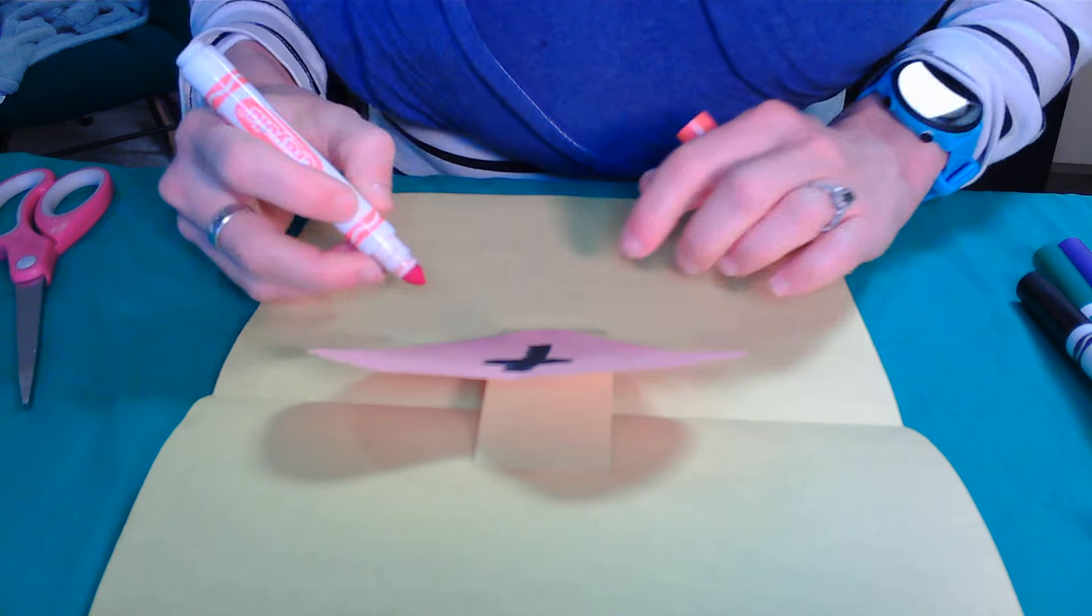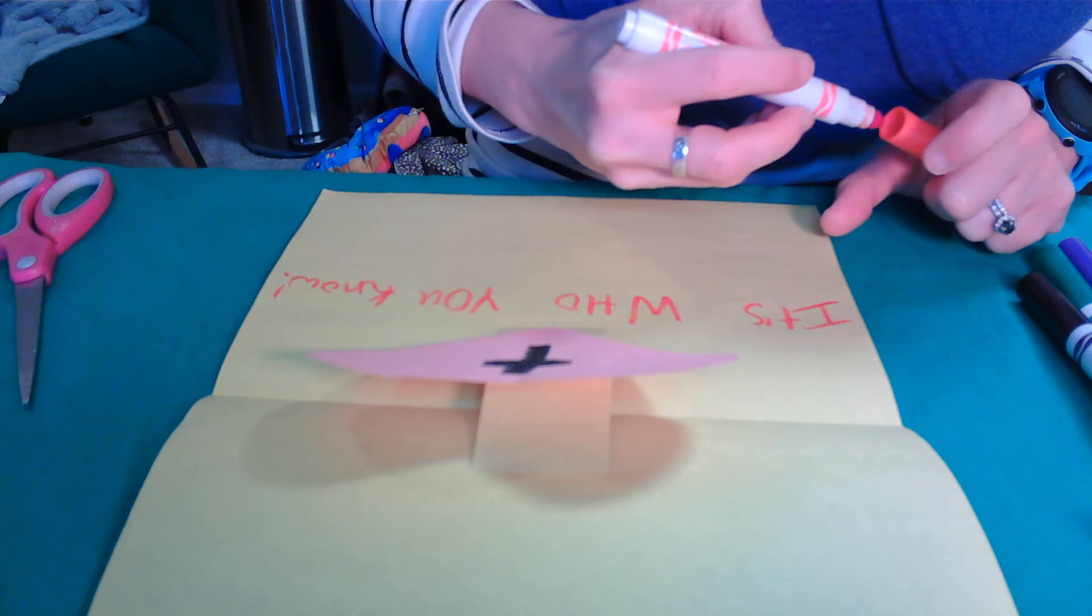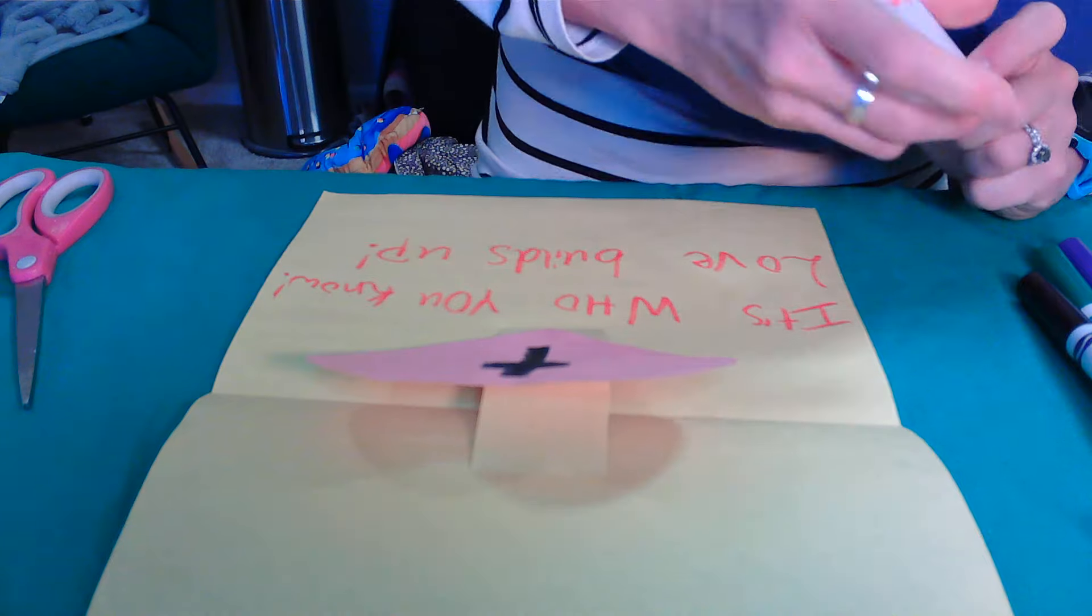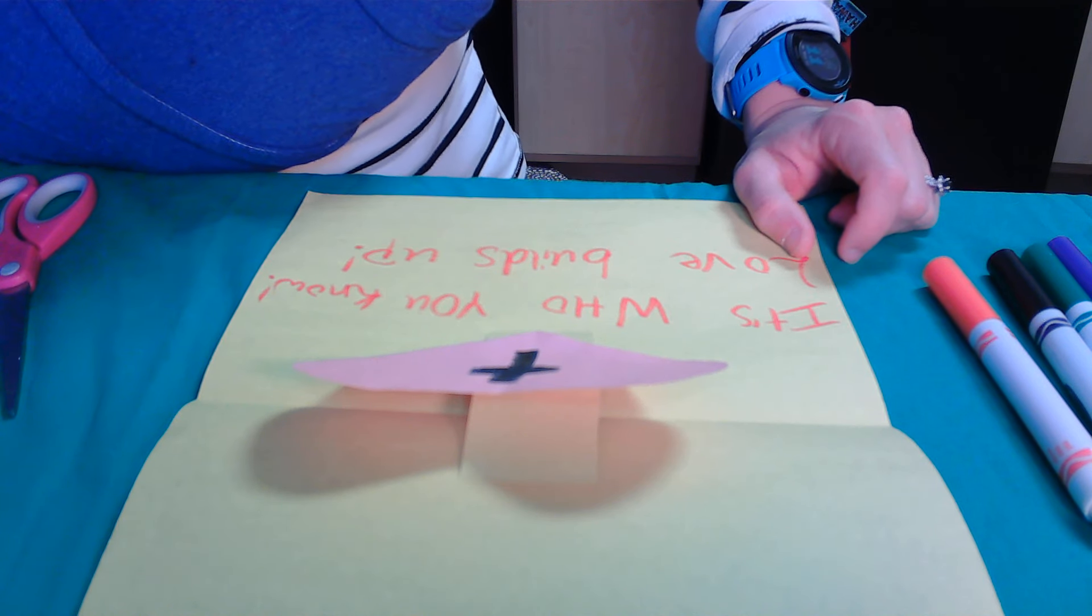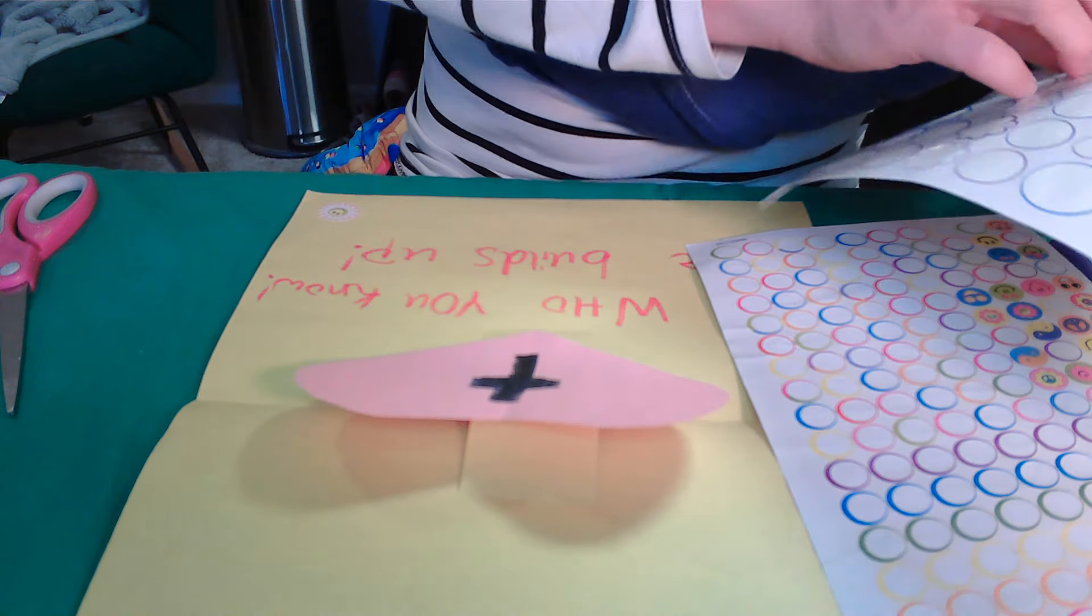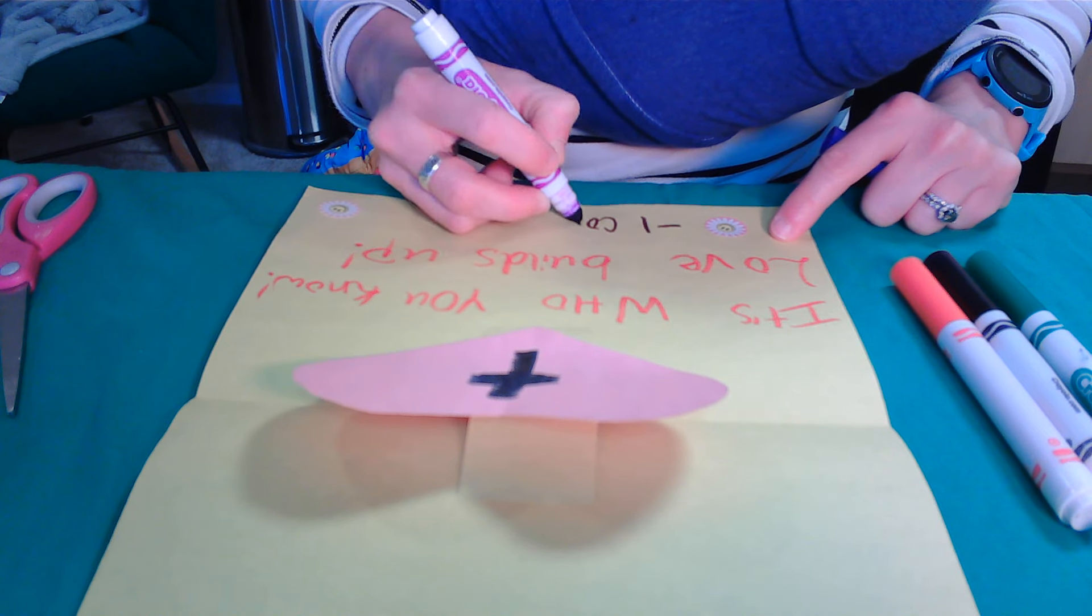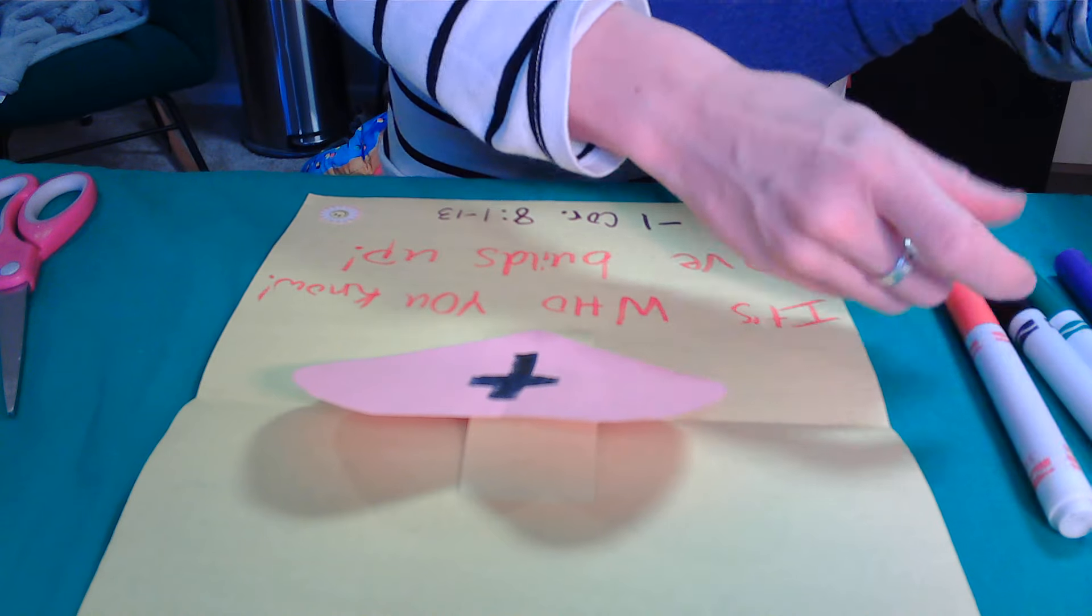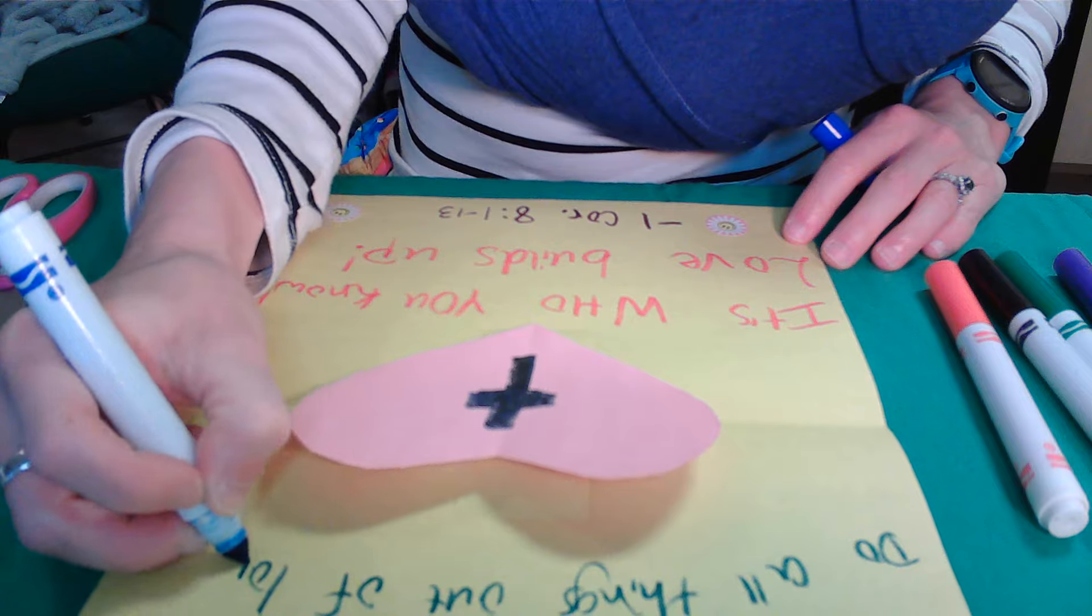But on the inside, we'll say it's who you know. Love builds up. Because that's the whole theme here. Knowledge puffs up, but love builds up. And if you like, you can add some more decorative pieces here. Maybe we've got some fun stickers. Never go wrong with those. And we can mark our verse. 1 Corinthians. This is from chapter 8, verses 1 through 13. And we can put something else like do all things out of love. Something like that.